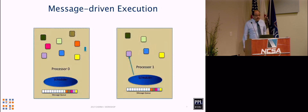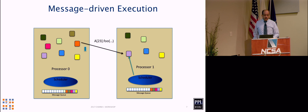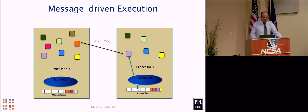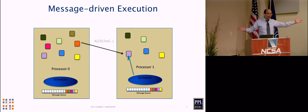Pictorially: when you invoke a method — say the orange object wants to invoke method foo with parameters on the 23rd member of collection A — those parameters are packaged into an envelope. The address of that object and foo is stamped on the envelope, and the runtime system figures out where it lives and puts it in a queue on that processor. There is always a scheduler on each core doing message-driven scheduling. When it comes to the front of the queue, the scheduler executes the entry method, leading to other such messages being formed. This is the whole execution model for CHARM++.